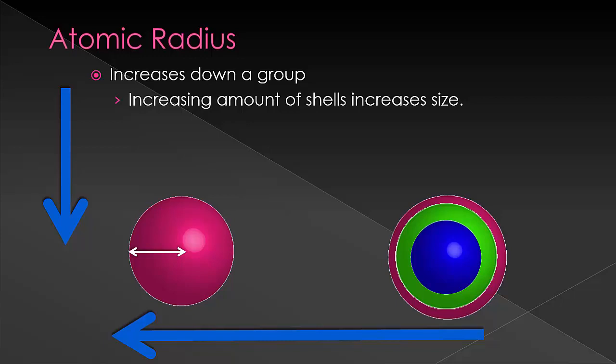Additionally, the shielding that we spoke about in other videos keeps the electrons from being pulled as tightly into the nucleus, since the electrons in the inside shells block those on the outside shells from feeling the nucleus as much.